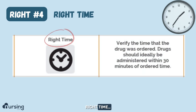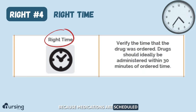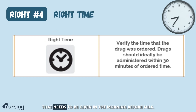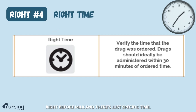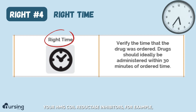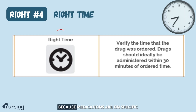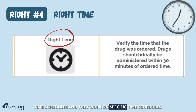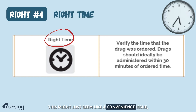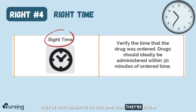The next one is right time. This is important because medications are scheduled and need to be given at specific times. Levothyroxine needs to be given in the morning before a meal. Rapid-acting insulins need to be given right before a meal. Some medications need to be given right before bed — your HMG-CoA reductase inhibitors, for example, need to be given before sleep. Because medications work on specific time schedules, it's incredibly important that you give them at the right time. This might seem like a convenience issue, but it's not — some medications are very sensitive to the time they're given.